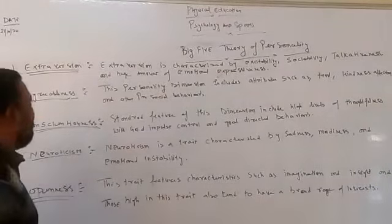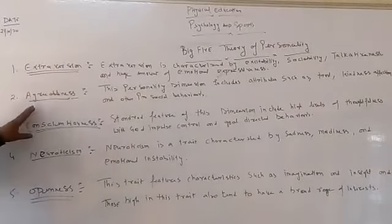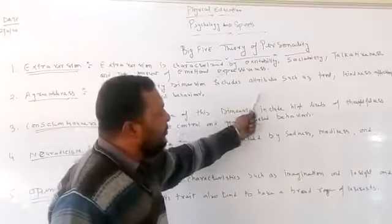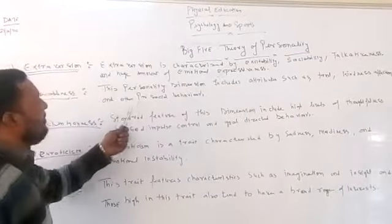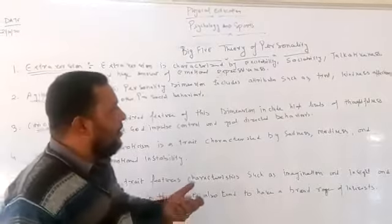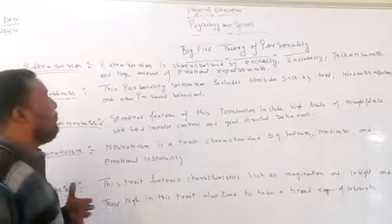Next one is agreeableness. This personality dimension includes attributes such as trust, kindness, affection, and other prosocial behaviors. If the person is having qualities like trust, kindness, affection, and prosocial behavior, you may easily put him in a bracket of agreeableness kind of personality.